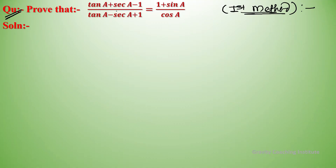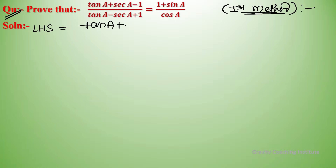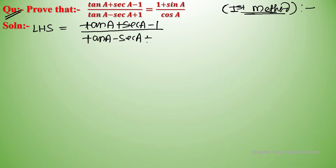Question: prove that tan A plus sec A minus 1 upon tan A minus sec A plus 1 equals 1 plus sin A upon cos A. We will solve using two different methods. First method: LHS is equal to tan A plus sec A minus 1 upon tan A minus sec A plus 1.